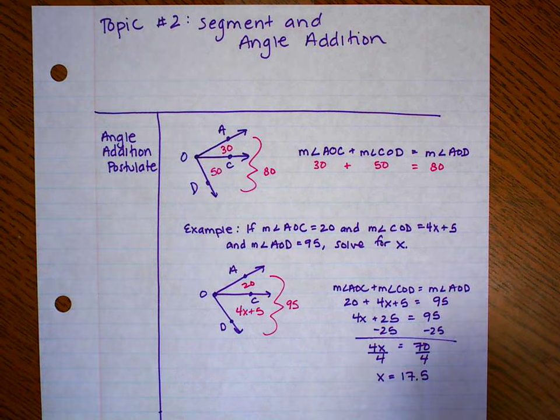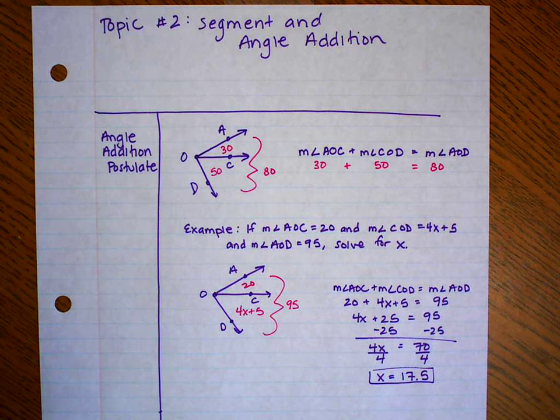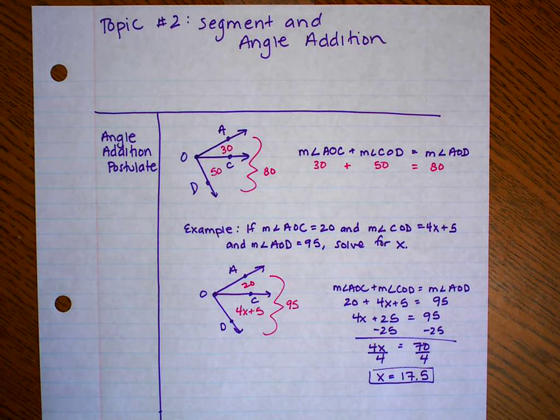So that's all the angle addition postulate is. It's saying if you have two portions of a big angle, you can add them together to get the value of the larger angle. So I hope that was helpful, and if you need to take some time to pause and go back through the notes, you can.